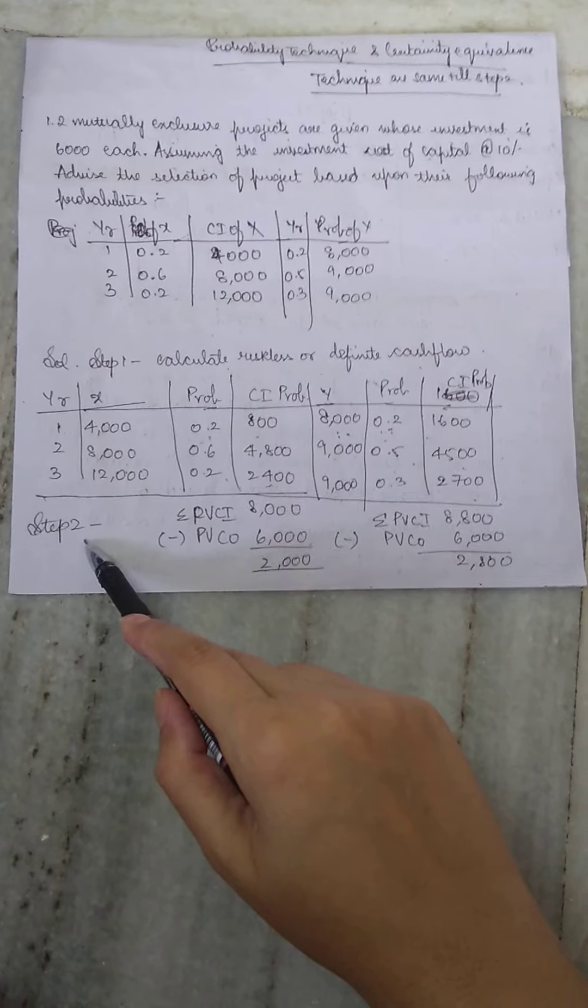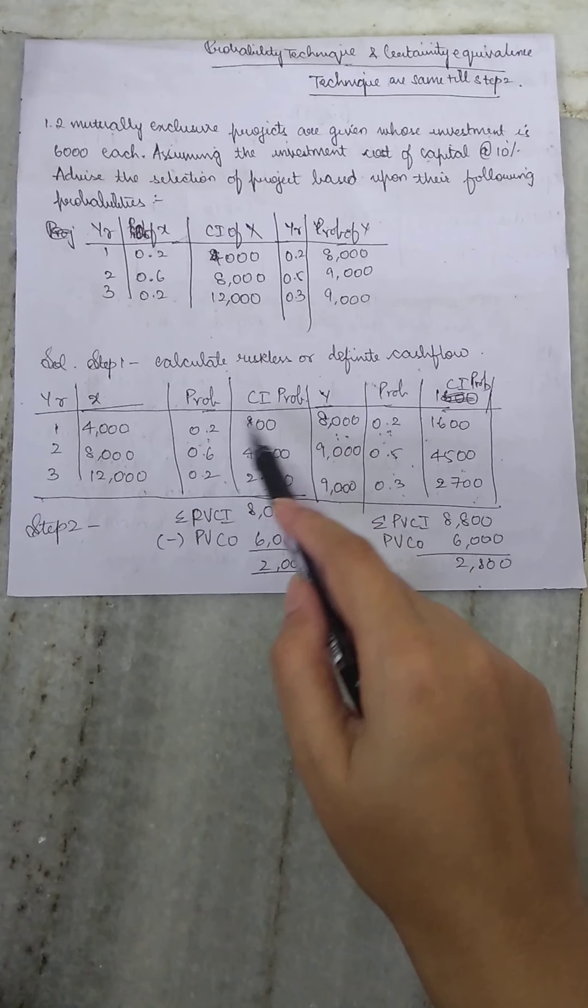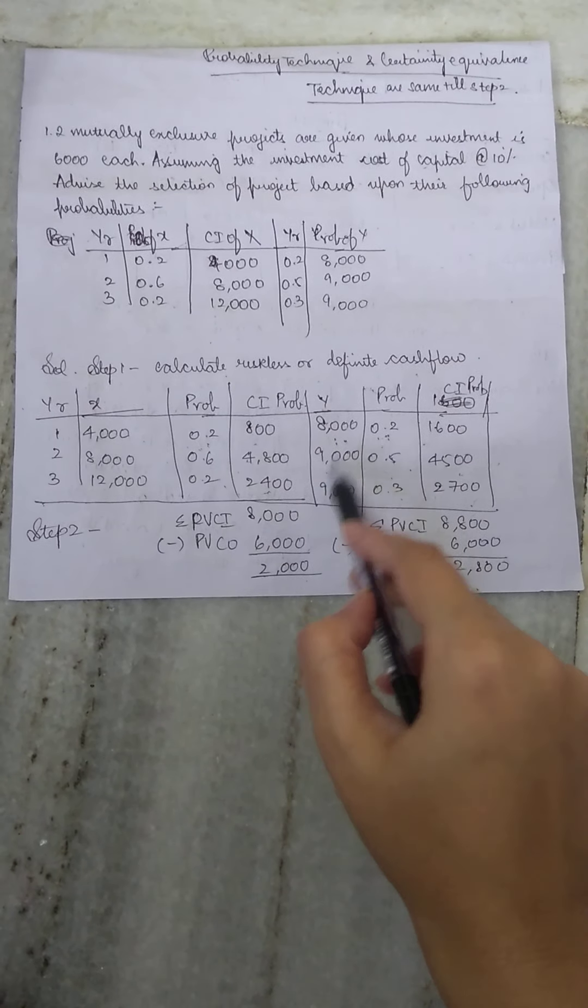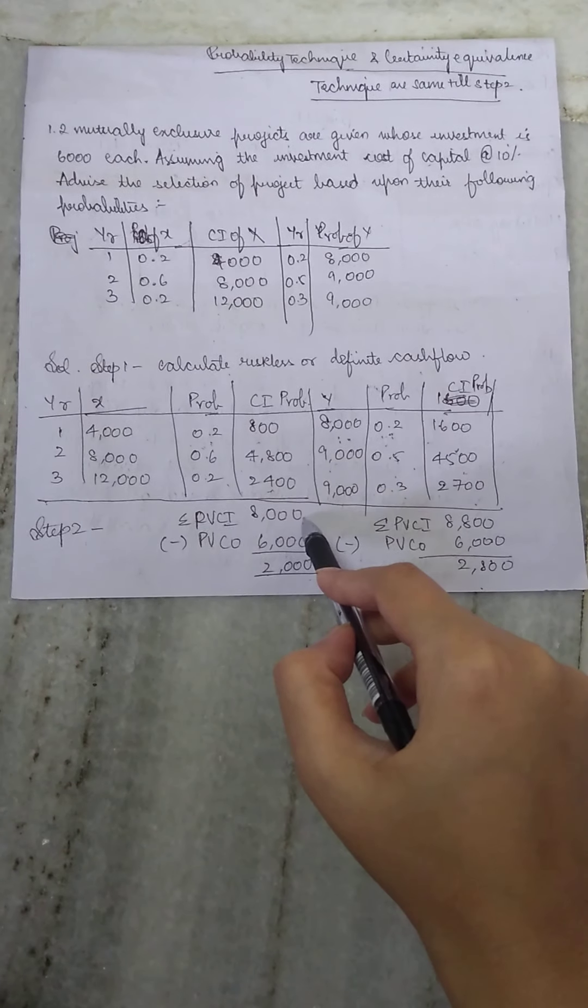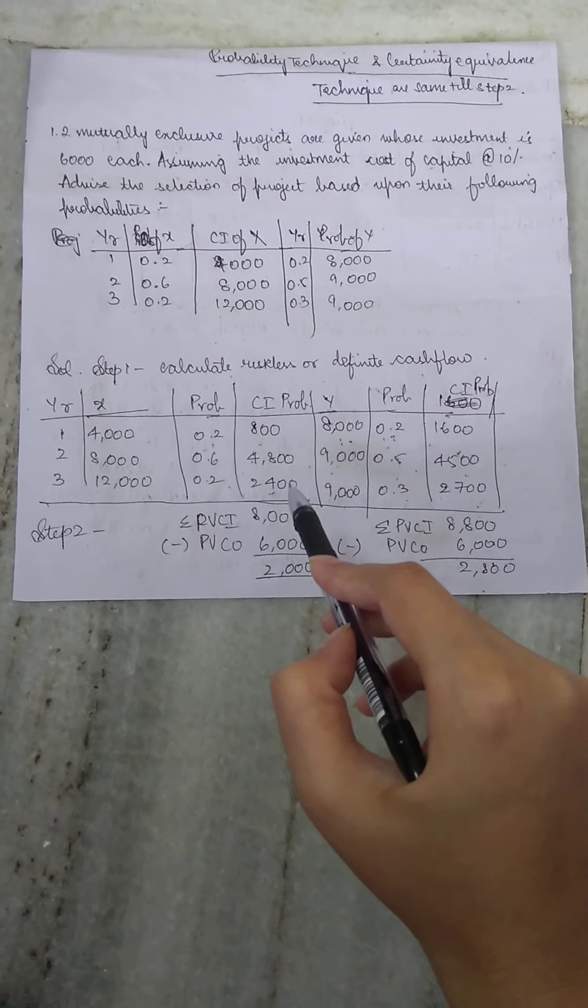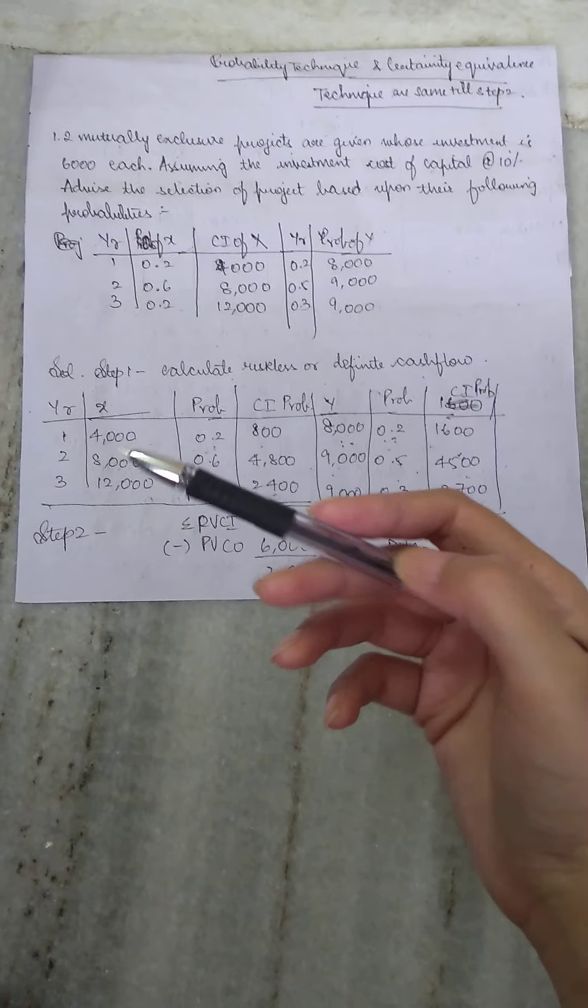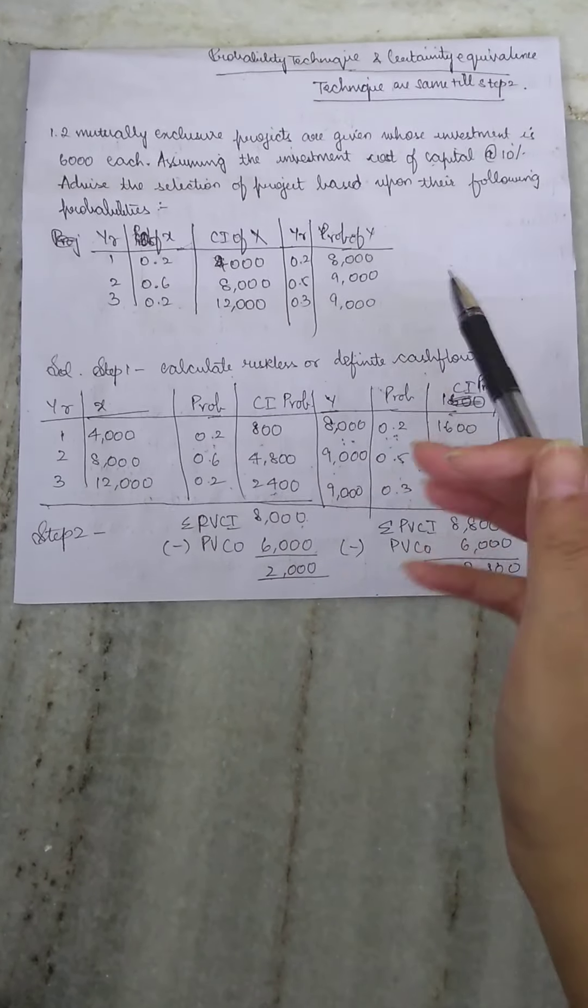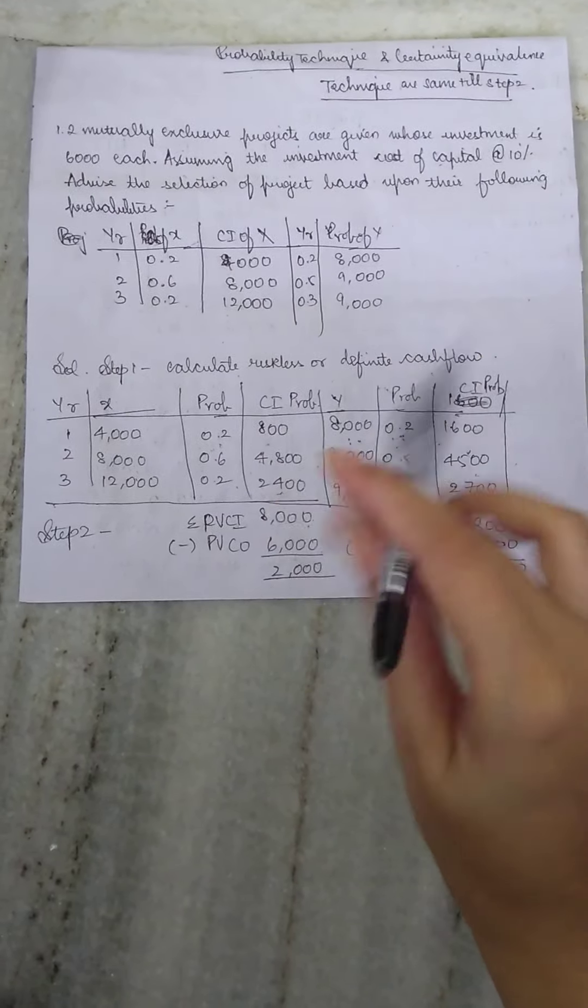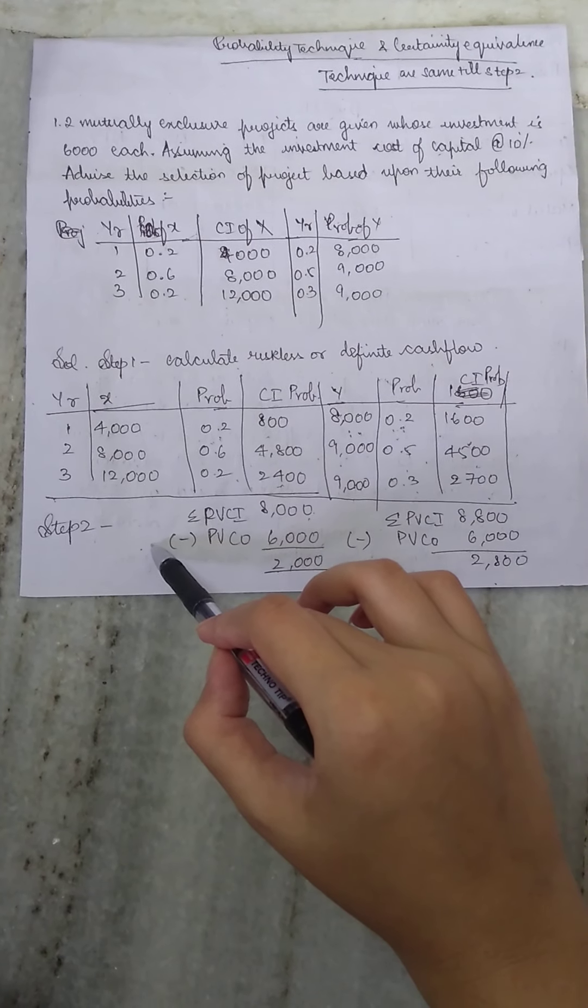Now coming to step two. Step one is similar right, cash flows for both. That is definite amount which we will get in any scenario, whether the market is bad, whether they make a profit or whether they do not make a profit. Now coming to step two, what did we do in step two? Step two we calculated our NPVs.